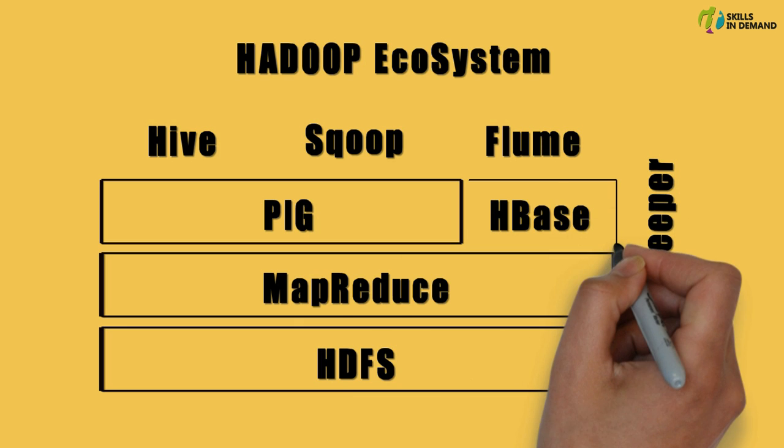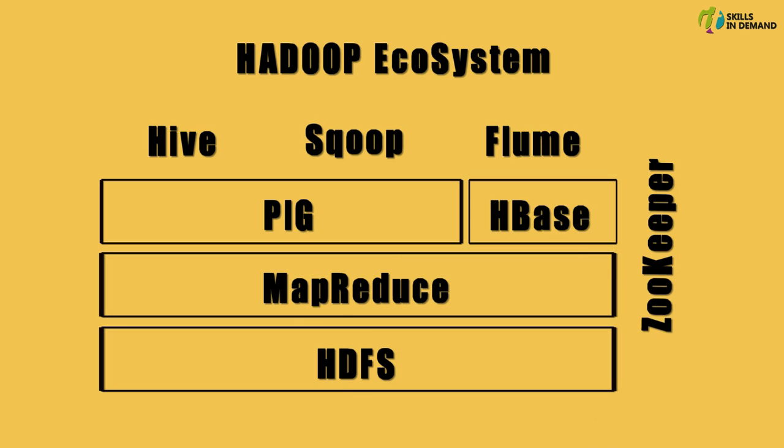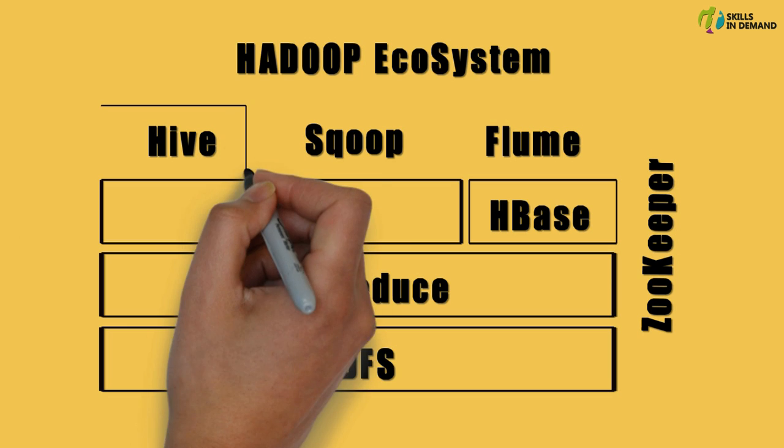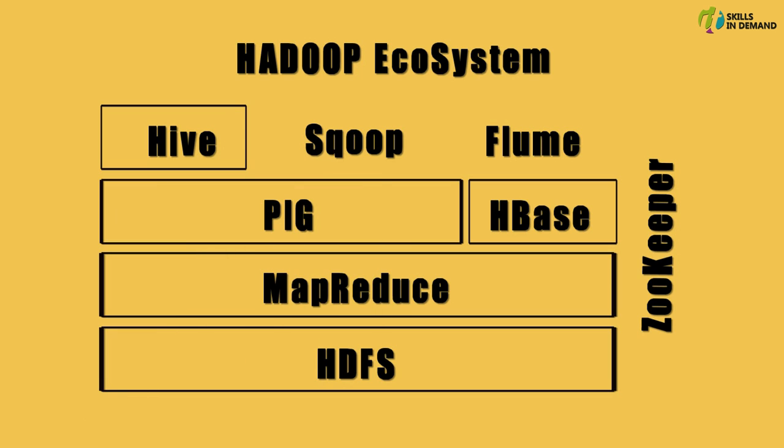Apache HBase is a column-oriented database that allows reading and writing of data onto HDFS on a real-time basis. Apache Hive is a SQL-like language which allows querying of data from HDFS. The SQL version of Hive is called HiveQL.